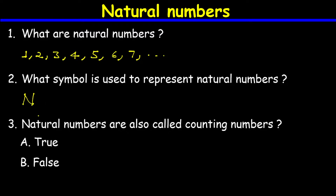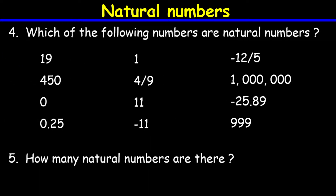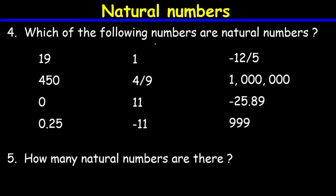Question number three: natural numbers are also called counting numbers — true or false? The answer is true. Natural numbers are also called counting numbers because when we count objects we start with 1, and natural numbers also start with 1. Therefore natural numbers are also called counting numbers.